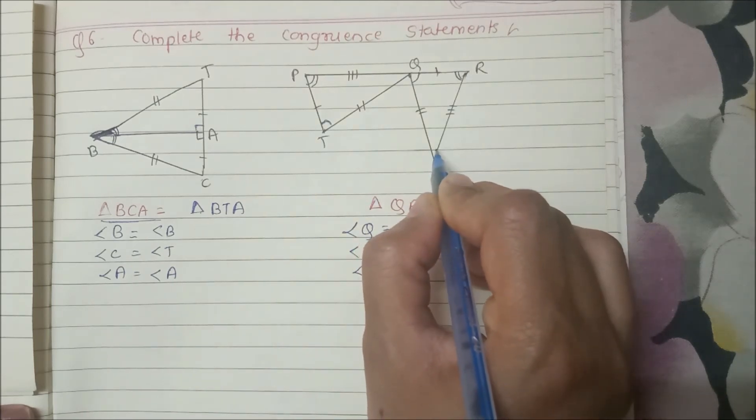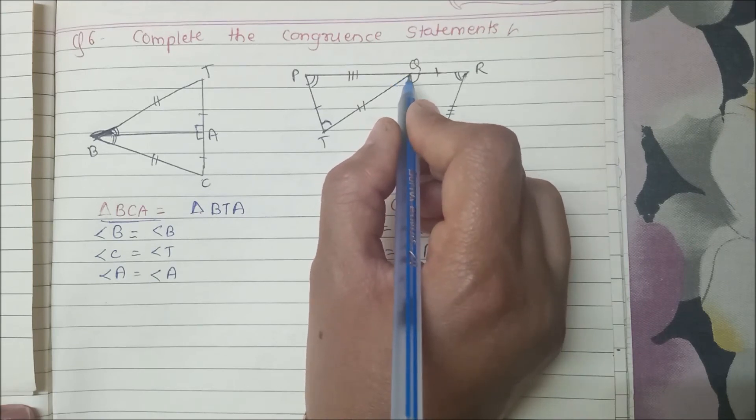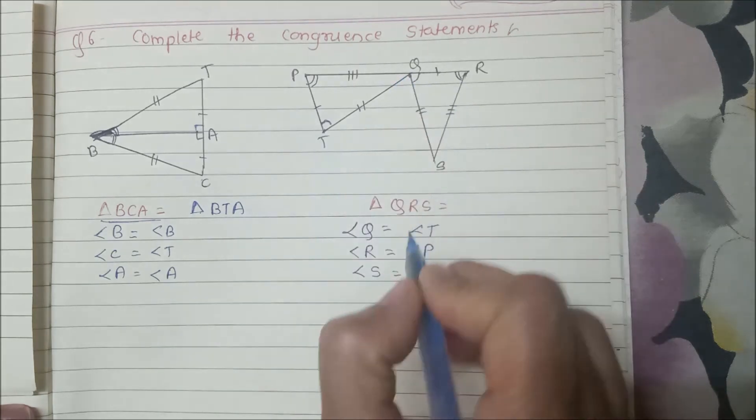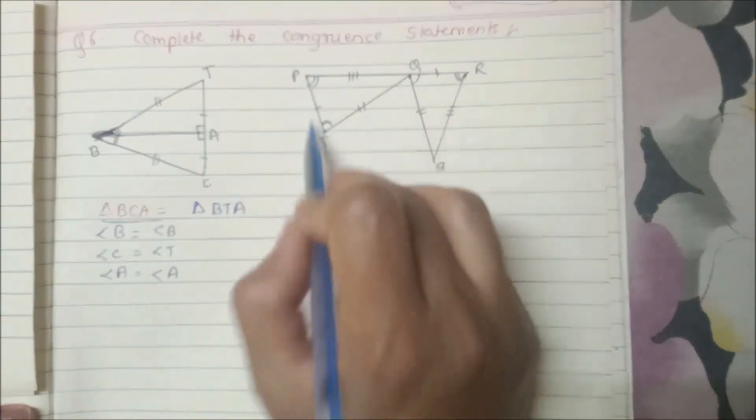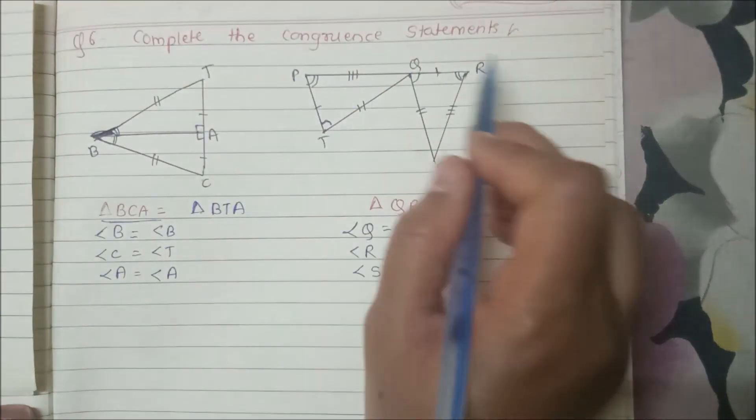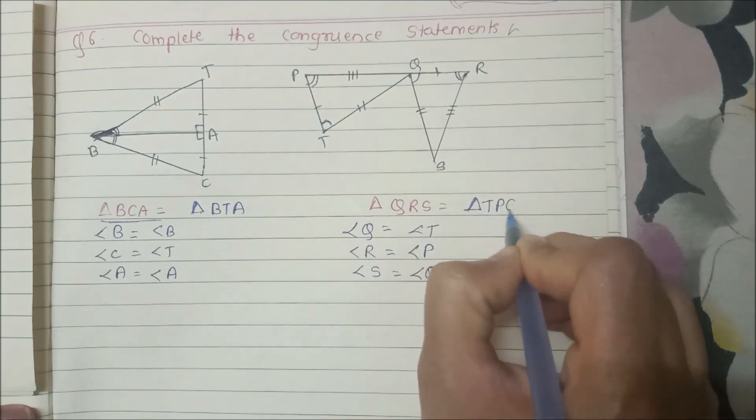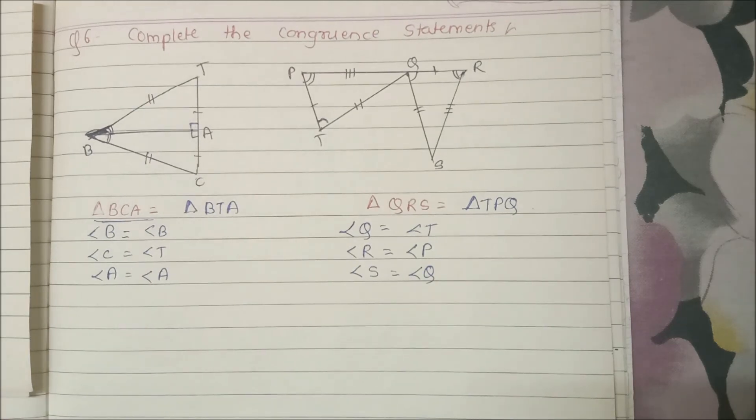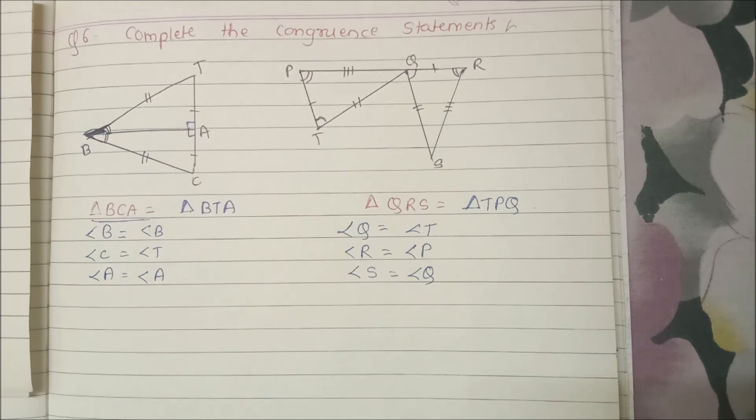The last one in this is S. Then here we will call it Q. So if we talk about these three triangles, PQT and QRS, so here we will call it TPQ which will be equal to QRS. So this way question number 6 we have completed. For the questions we will cover in our next video. Thank you so much, thanks a lot.